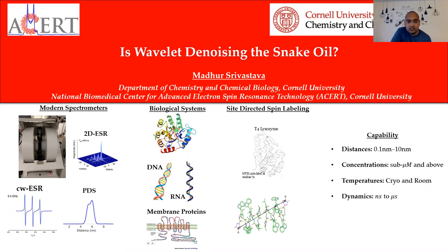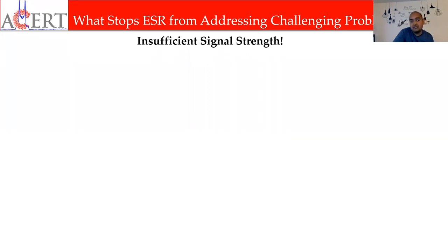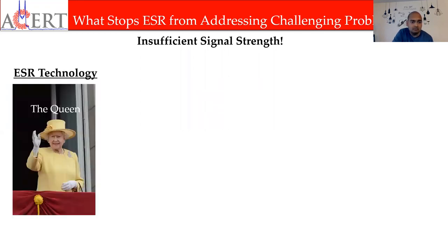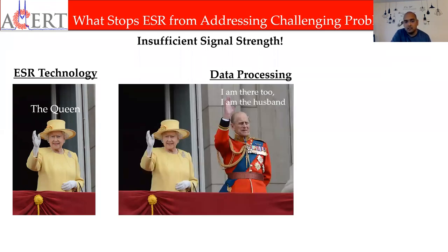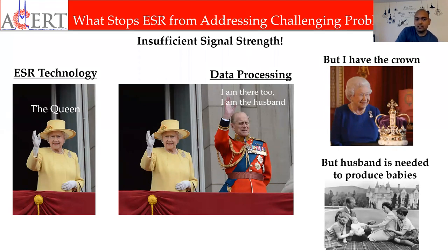But what has stopped us from addressing some of the challenging questions? It's always insufficient signal strength. We have all this modern technology with so much capability, but we still have insufficient signal strength, as many of you may have encountered. ESR technology is like the queen saying 'I rule the world,' but data processing is like the husband saying 'I can help you.' The queen says she doesn't need help — but to have kids, you need a husband. So how can data processing help us overcome this insufficient signal strength?